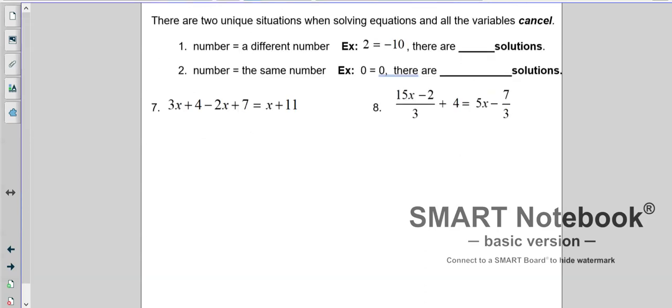We're almost done. There are two unique situations with solving equations, and the variables cancel. If we get a number equal to a different number, like 2 equals negative 10, there are no solutions. If we get the number equals a number like 0 equals 0, 5 equals 5, that means there are infinite solutions. That means any number you plug in will work. So let's see what we have here. We have 3x minus 2x is x. 4 plus 7 is 11. You might even be able to see right now that the right side and left side are exactly the same. You could stop now and say infinite solutions.